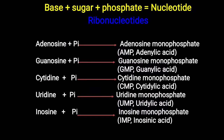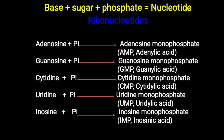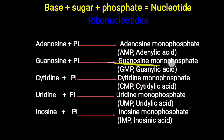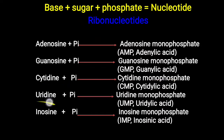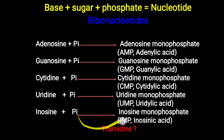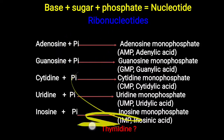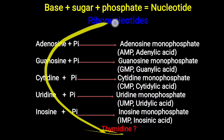Base + sugar + phosphate makes a nucleotide. Adenosine + phosphate = AMP (adenosine monophosphate). Similarly: guanosine monophosphate (GMP), cytidine monophosphate (CMP), uridine monophosphate (UMP), and inosine monophosphate (IMP). Thymidine is not included in the ribonucleotide list because thymidine is attached only to deoxyribose sugar — it is not attached to ribose sugar and is generally not found in RNA molecules.